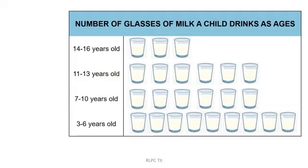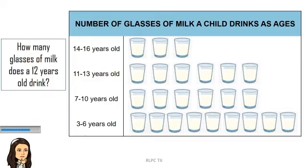Study the given pictograph about number of glasses of milk a child drinks at different ages and answer the questions later. How many glasses of milk does a 12 year old drink? The answer is 6 because 12 years old belongs to the age group of 11 to 13 years old.